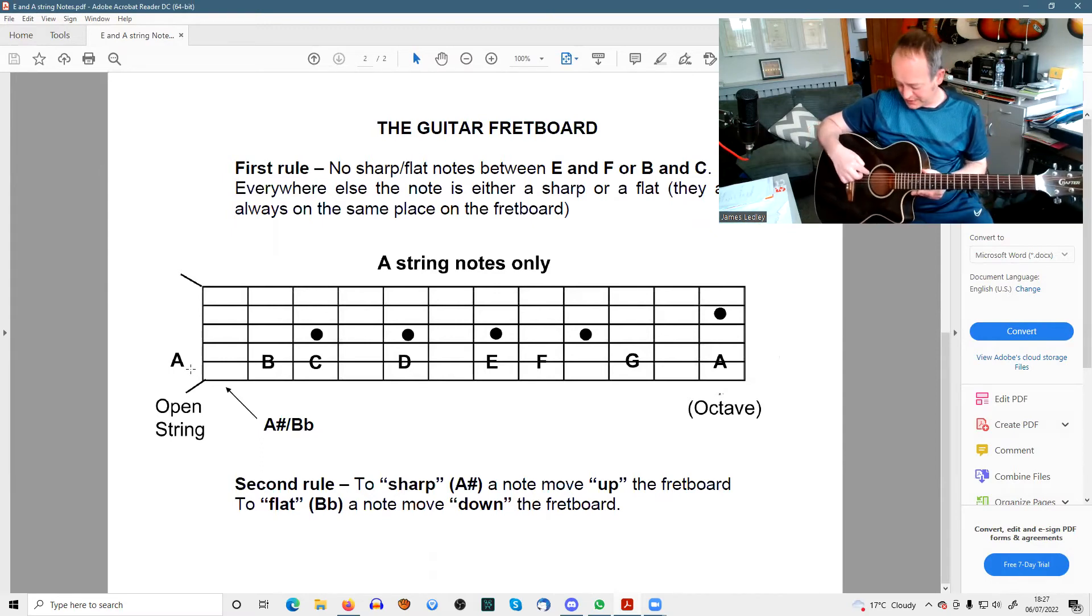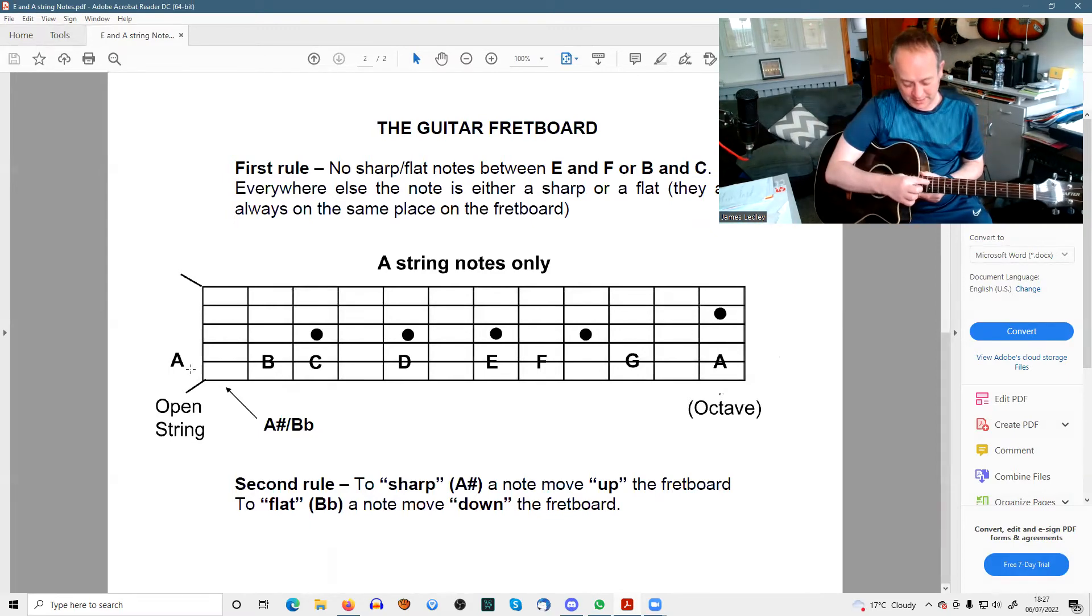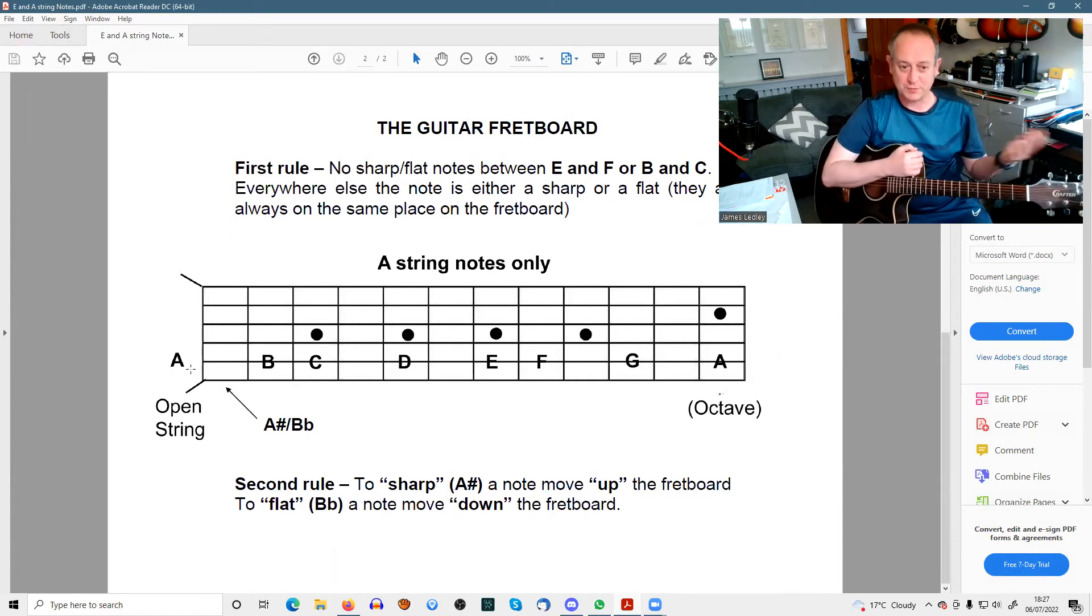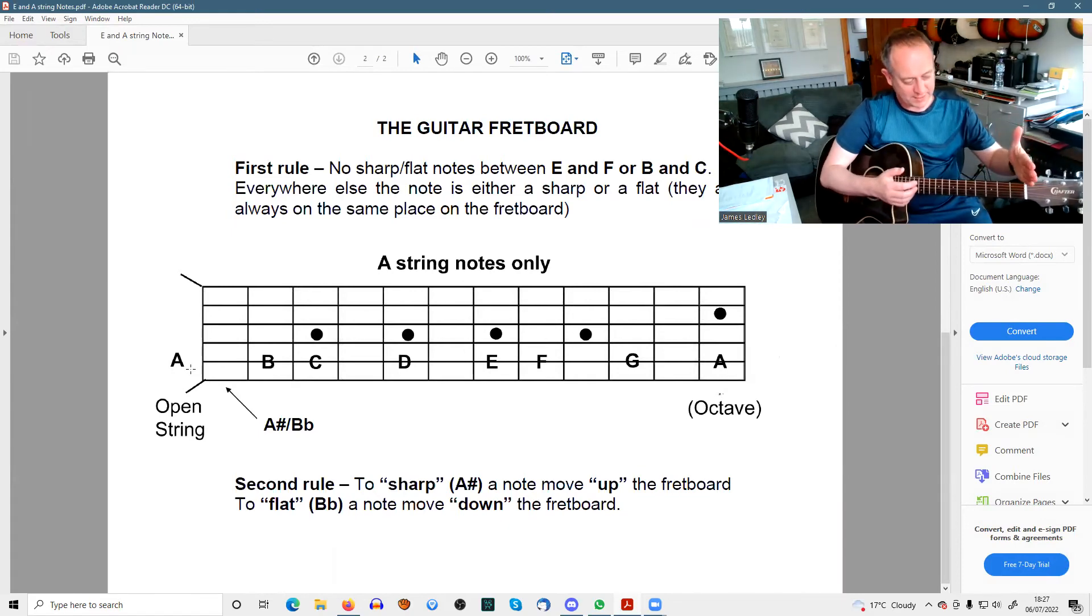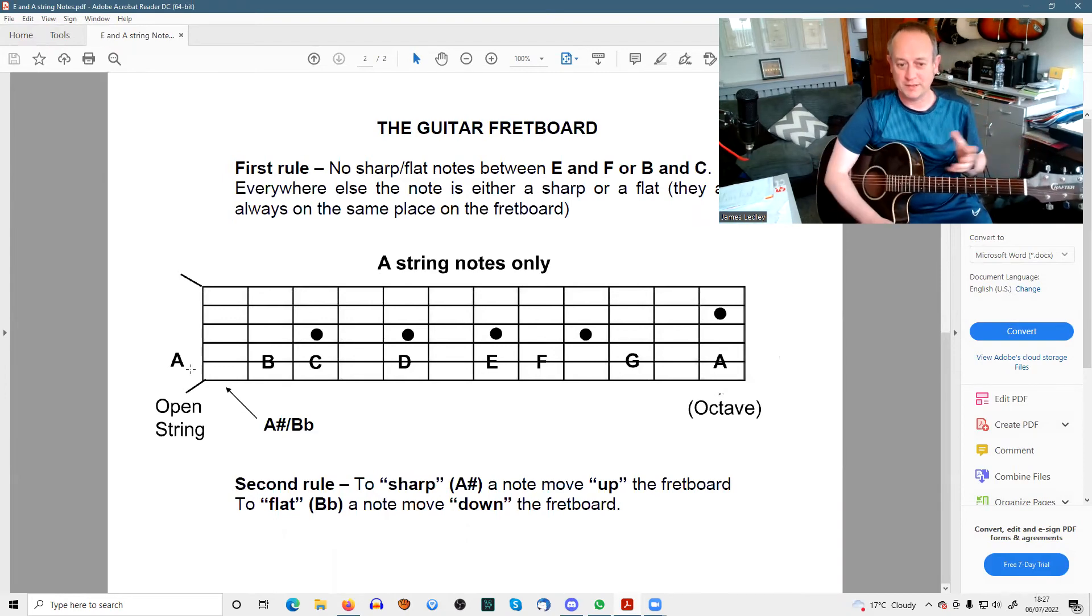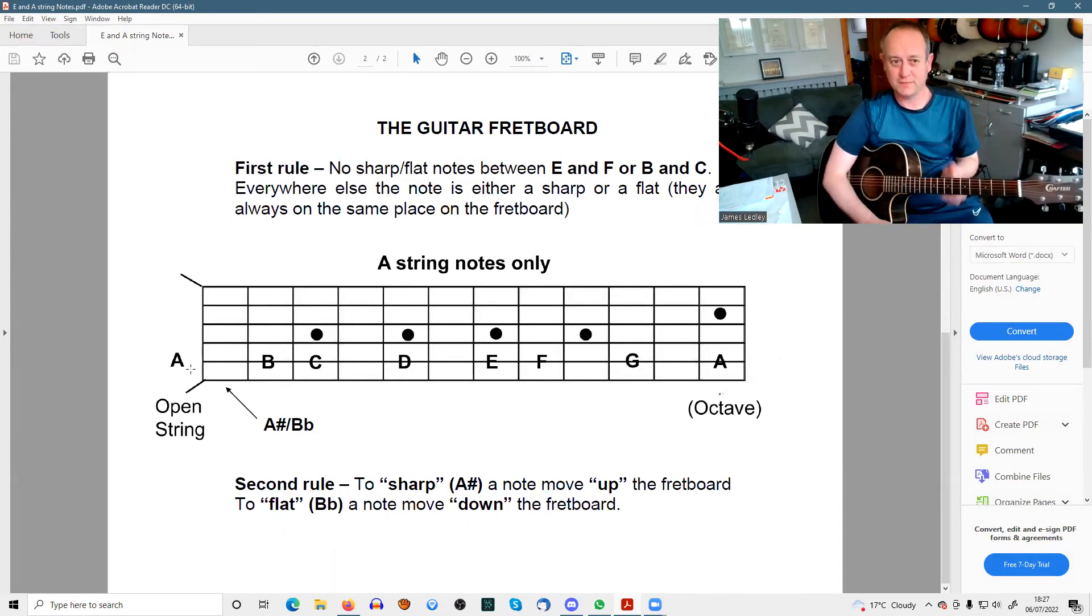So when your strings are running E, A, D, G, B, E when they're open, they're running E, A, D, G, B, E here as well. Of course, on the A string, if we went past the A, we would have A sharp and so on, then B. But we're only talking about it in terms of the open string to the 12th fret. That really is the fretboard. The rest of it's just repeating.